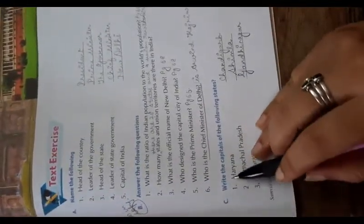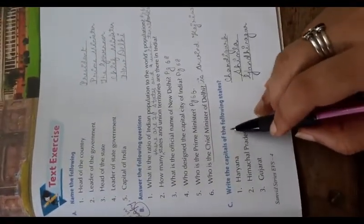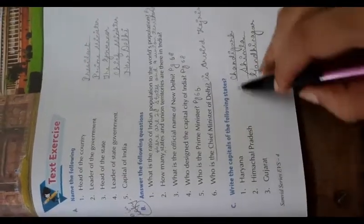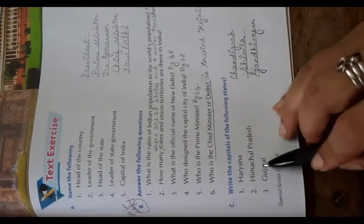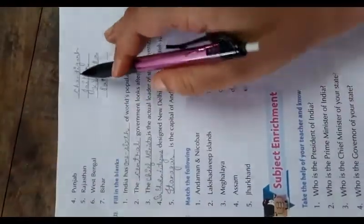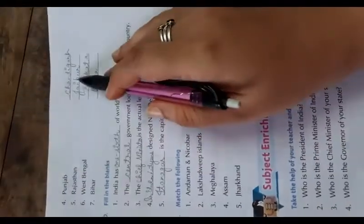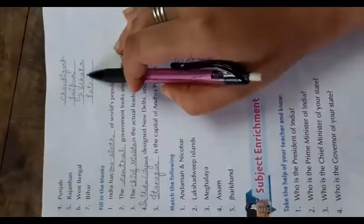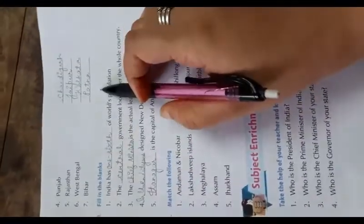Now question number C: write the capitals of the following state. Haryana: Chandigarh. Himachal Pradesh: Shimla. Gujarat: Gandhinagar. Punjab: Chandigarh. Rajasthan: Jaipur. West Bengal: Kolkata. Bihar: Patna.